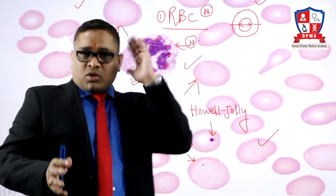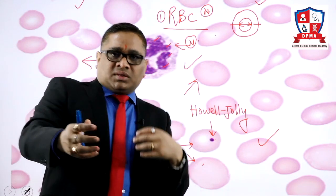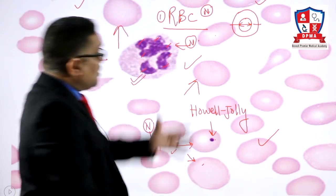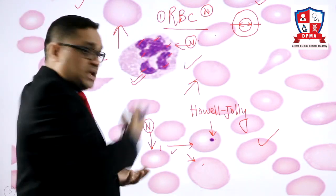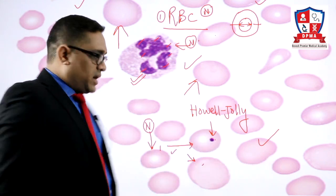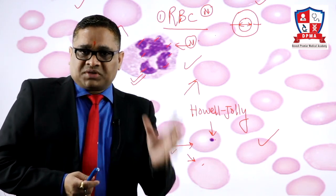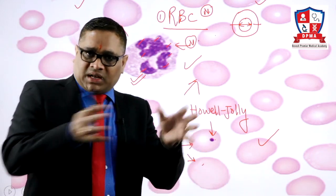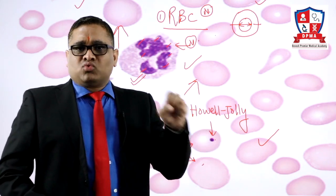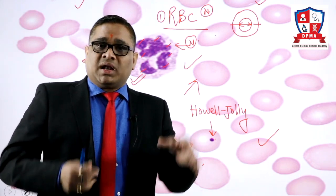Whenever a question is asked, don't become panicked. First reflex: see the image at five places — all four corners and the center — then start observation, then compare cells with each other, talk to them. That is the meaning of talking to them: asking, 'What is this? Why are you so big? Why, neutrophil, are you having so many segments — are you hypersegmented?' That is how we study and approach hematology questions. This is for exam as well as for self-study. During self-study, we often miss images and do not emphasize them.